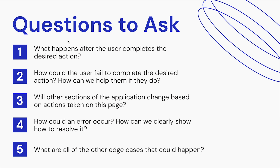Four, how could any error potentially occur and how can we clearly show how to resolve it? Error messages are one of the most frustrating things for users in design. If they aren't handled well, it could potentially make them never come back to the app again. Five, what are all the other edge cases that could potentially happen and what are users going to see if they do run into one of those edge cases? All of that needs to be considered. This is really the biggest difference between a beginner and an advanced designer — how they think about small details and what answers they've thought of for all of these different situations.